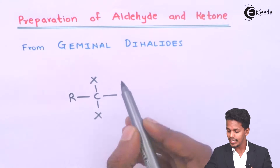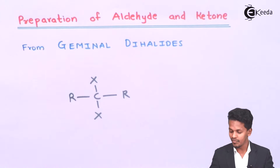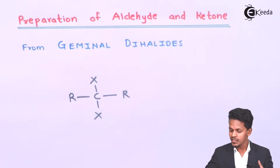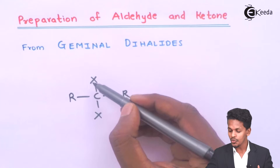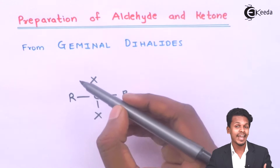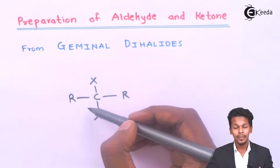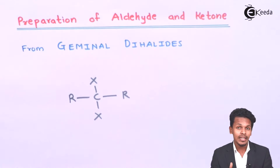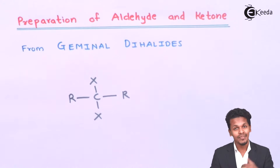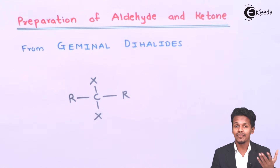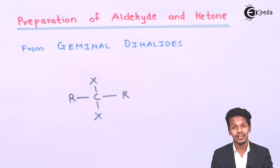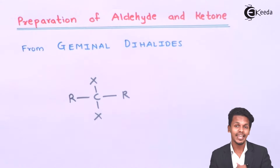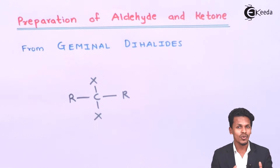This is the general formula of a geminal dihalide. In this case, the two halogen groups are attached to the same carbon atom. By using different germinal dihalides, we can prepare either an aldehyde or a ketone.